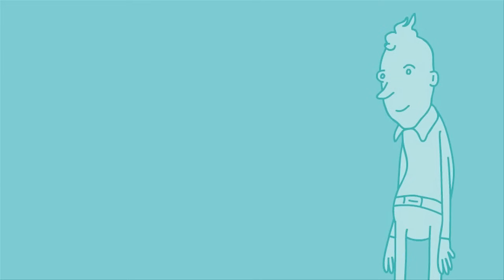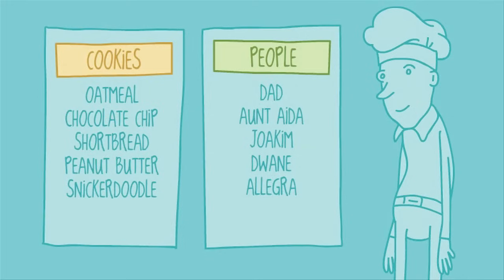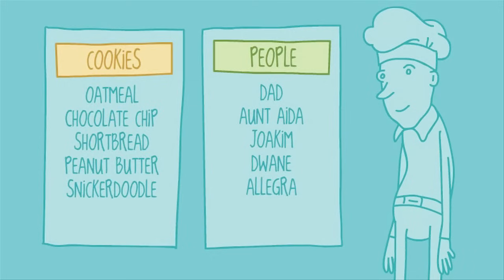Say you're a hard-working amateur baker. You might decide to keep a database of all the cookies you know how to make, and the people you make them for — your friends and family. A simple database, because it only contains two lists.